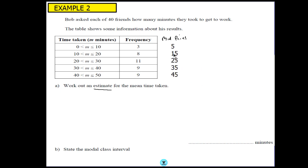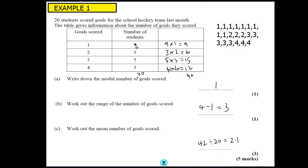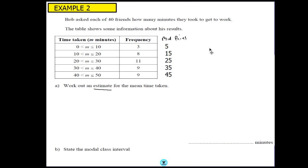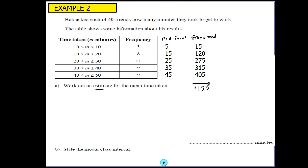We use the middle value between 0 and 10 because if 3 people took between 0 and 10 minutes, the most sensible value to use is the middle value. So we write down the midpoints: between 0 and 10 it's 5, between 10 and 20 it's 15, and so on. Then we do frequency times midpoint — 3 times 5 is 15, 8 times 15, and so on. Adding all of those up gives 1130. We know there were 40 people, so we do 1130 divided by 40, which gives us 28.25 minutes as our estimate of the mean.